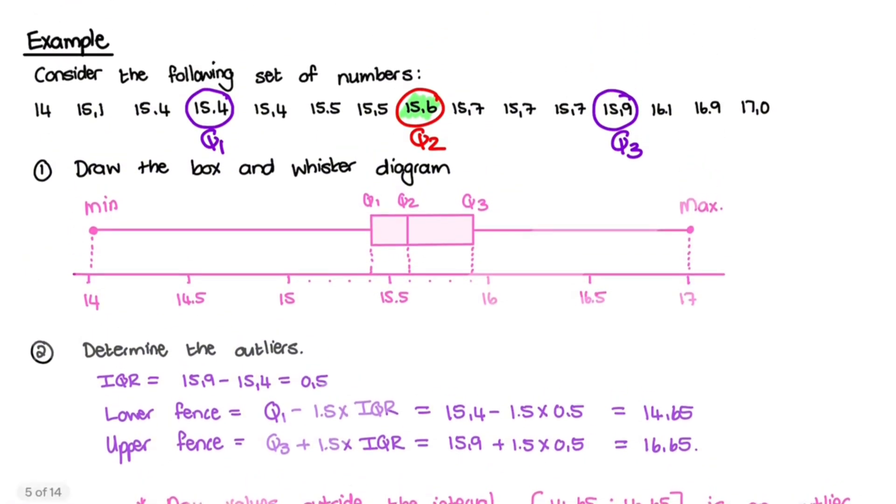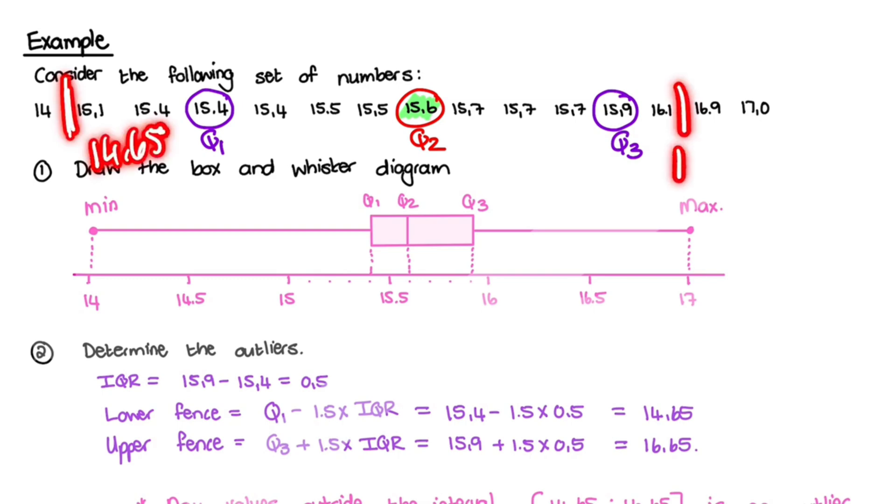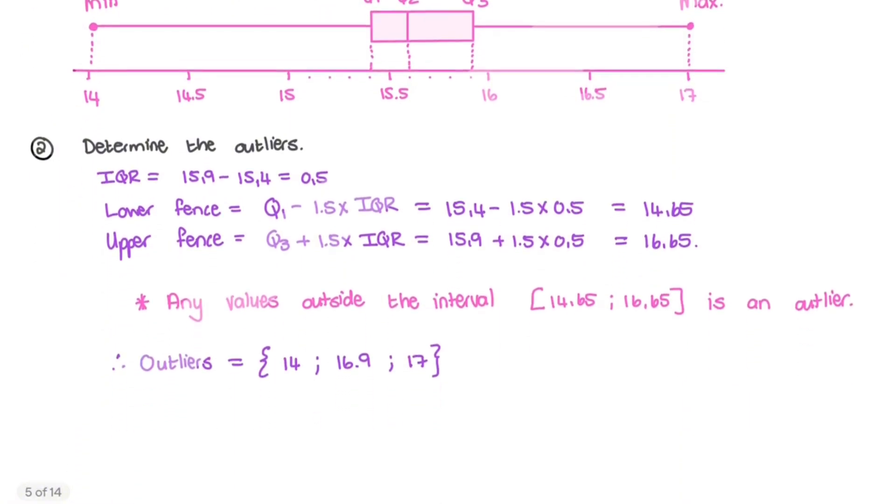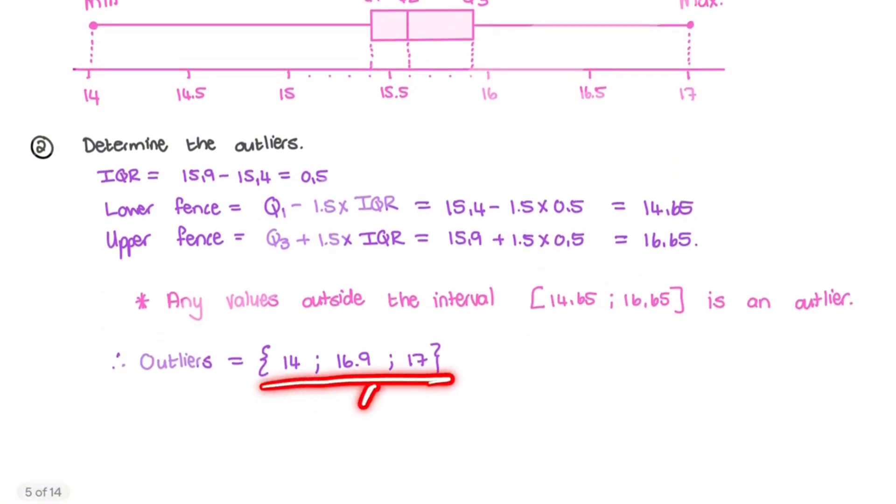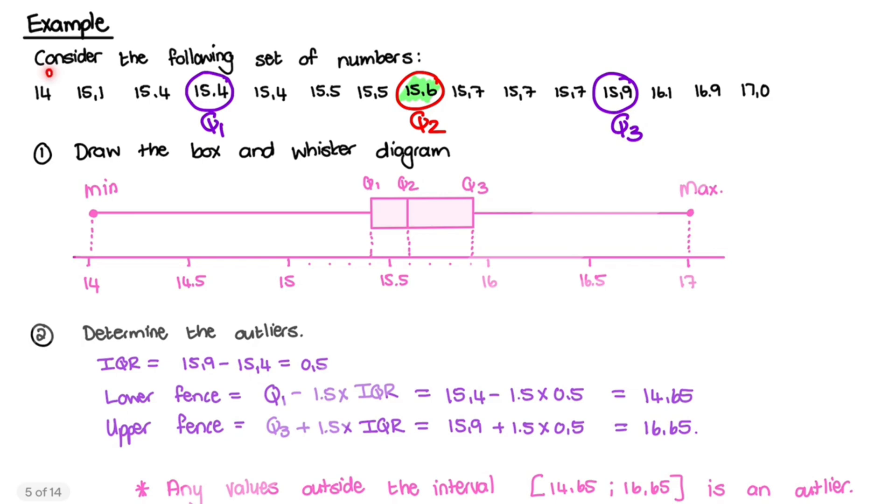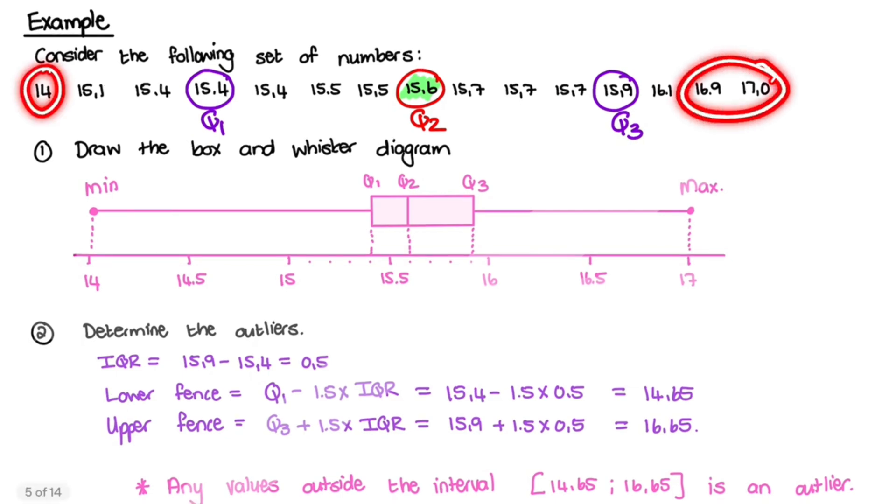See, if I go to the data quickly, that 14.65 would be here between 14 and 15.1, and the 16.65 would be there before 16.9. So can you see, on the outside of that, we have 14 and 16.9 and 17. So those three values are considered outliers, so they do not form or fall into the pattern of the rest of the data points.